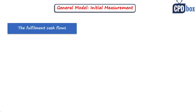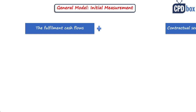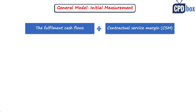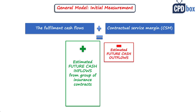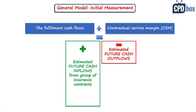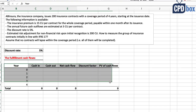Before solving the case, let's revise: in the previous lesson we learned that initially we measure insurance contracts at the sum of fulfillment cash flows and the contractual service margin. The first two components of the fulfillment cash flows are estimated future cash inflows and estimated future cash outflows from the group of insurance contracts.